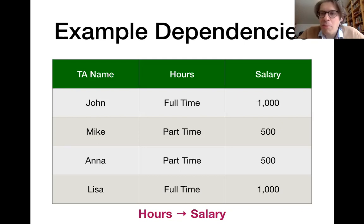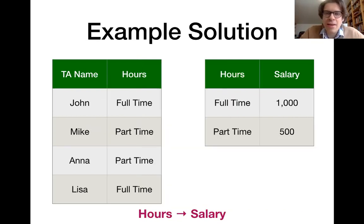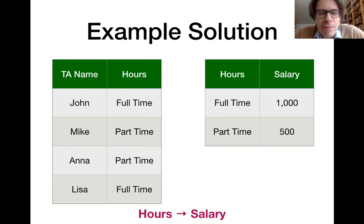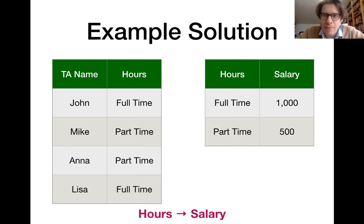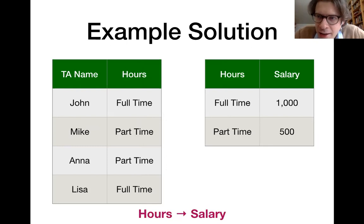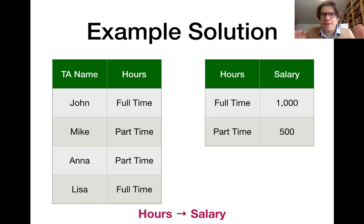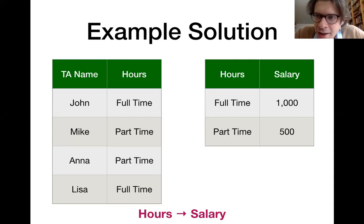In this example, we probably want to represent a table like this divided into two tables: one keeps track of dependencies between the TA name and the number of hours they work, and the other keeps track of dependencies between the number of hours and the associated salary. We have seen a couple of algorithms that bring an initial database schema into normal forms, which makes certain guarantees about which dependencies you may still have in the data.